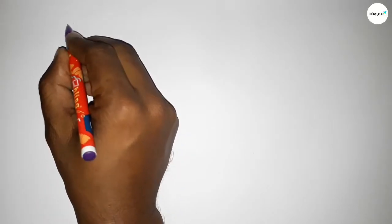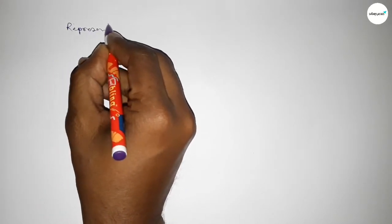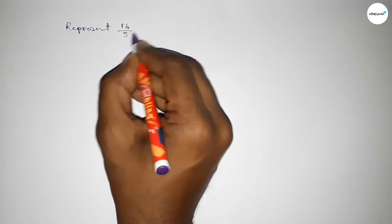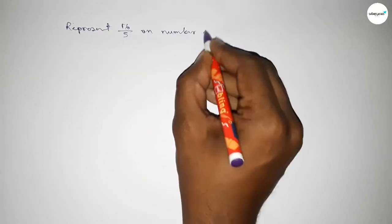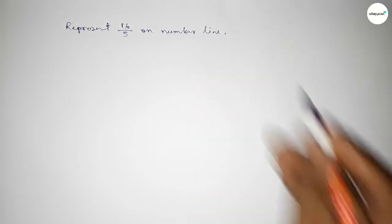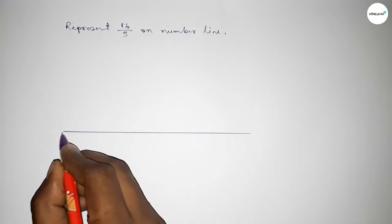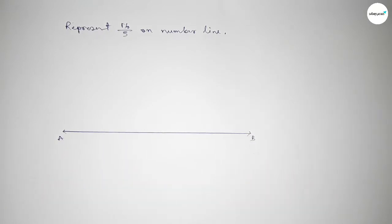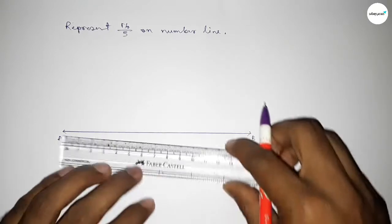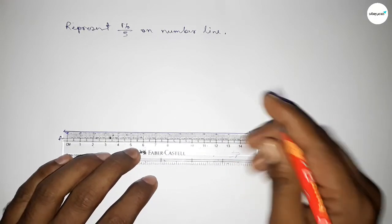Hi everyone, welcome to SI Share Classes. Today in this video we have to represent 16 over 5 on a number line. So let's start the video. First of all, we have to draw the number line, taking arrow marks on both sides. This is a straight line.